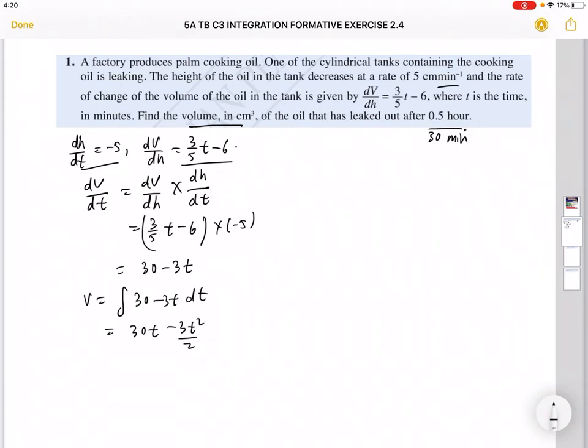So this is 30t minus 3t²/2 plus c. Now we're assuming—you have to put a plus c—we're assuming that when t is 0, volume is 0, so c is also 0. So your volume is 30t minus 3/2 t².